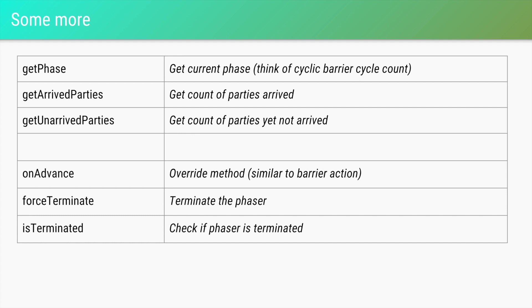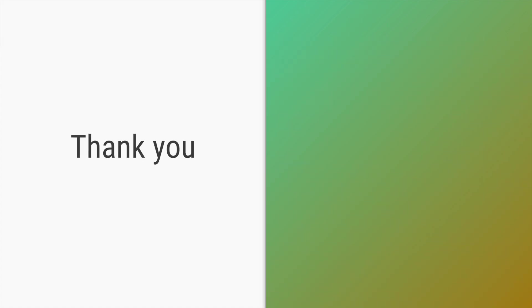You can also call getArrivedParties() and getUnarrivedParties() to check party counts. You can override the onAdvance() method, which is called as soon as the phase changes — similar to the barrier action in CyclicBarrier. There are also forceTerminate() to terminate the Phaser completely, and isTerminated() which threads can use to check if the Phaser has been terminated. In summary, Phaser acts like CountDownLatch, like a CyclicBarrier, and additionally supports dynamic registration and deregistration of parties at any time.